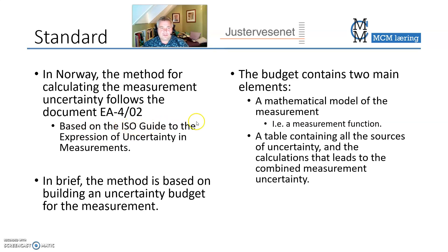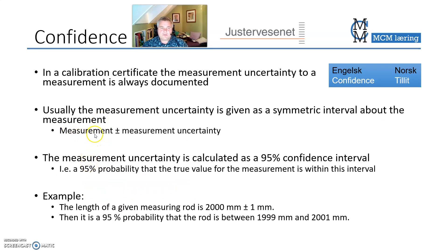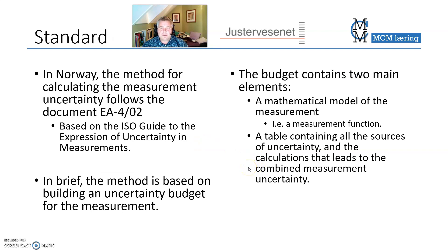ISO stands for International Standards Organization. The guide is called the Guide to Expression of Uncertainty in Measurements, and the Norwegian standard EA4-02 is basically the same as this ISO guide. In brief, the method is based on building an uncertainty budget for the measurement — you identify one uncertainty, another uncertainty, a third, a fourth — and then you have a total budget of all your uncertainties. From that you can state a measurement plus minus measurement uncertainty with the confidence interval. The budget contains two elements: the mathematical model for measurement (the measurement function), and a table containing all the sources of uncertainties.